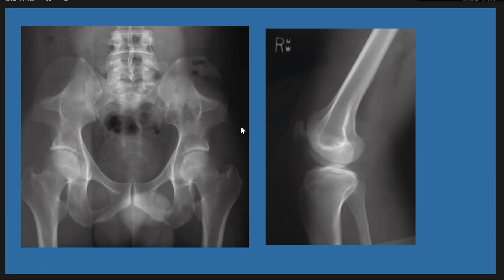Let us summarize the pathology. In the pelvic X-ray, we have flared iliac crest as we see here, bilateral iliac horns posteriorly located, and protuberance of the anterior superior iliac spine.